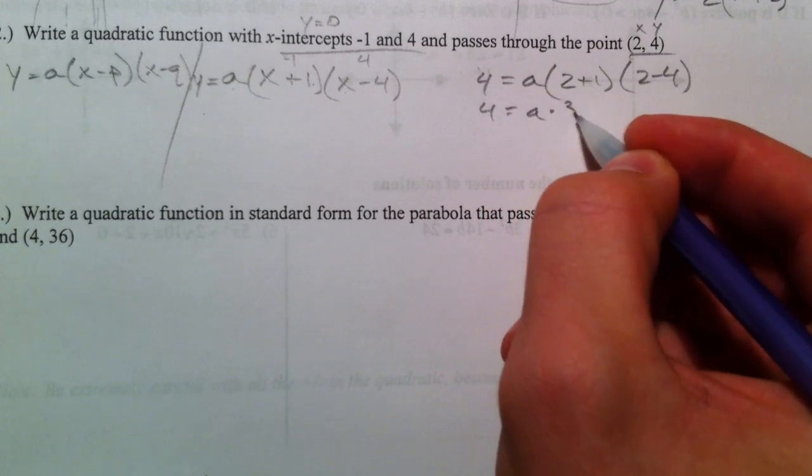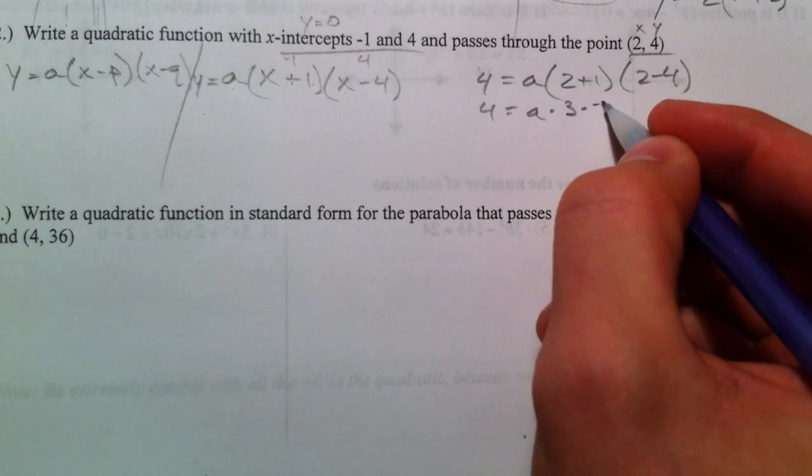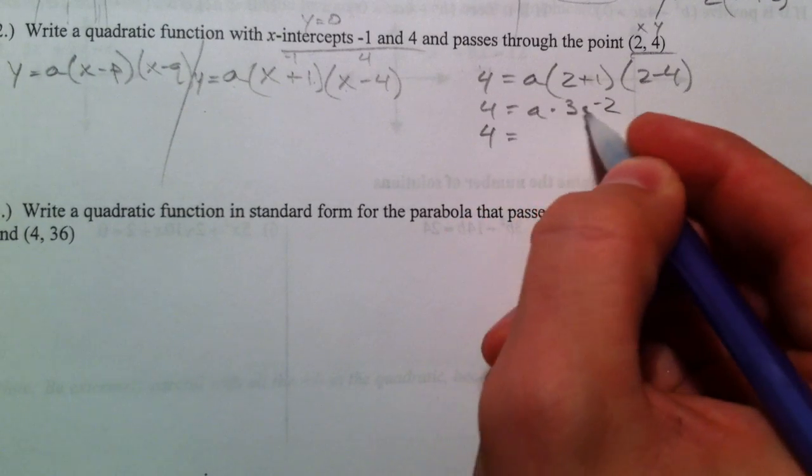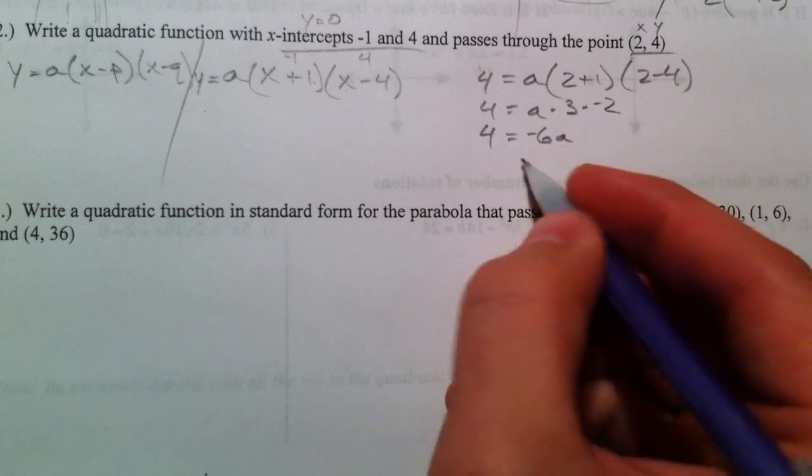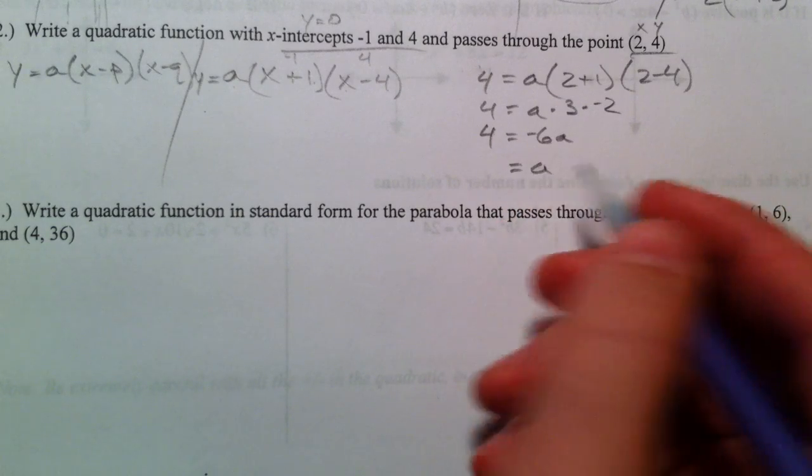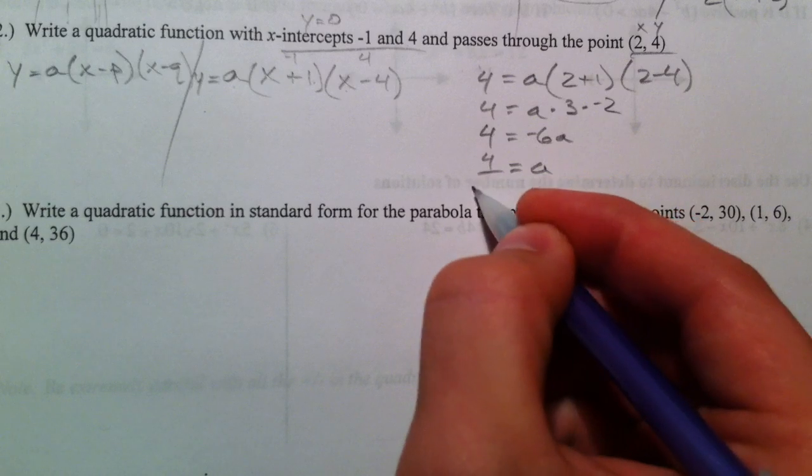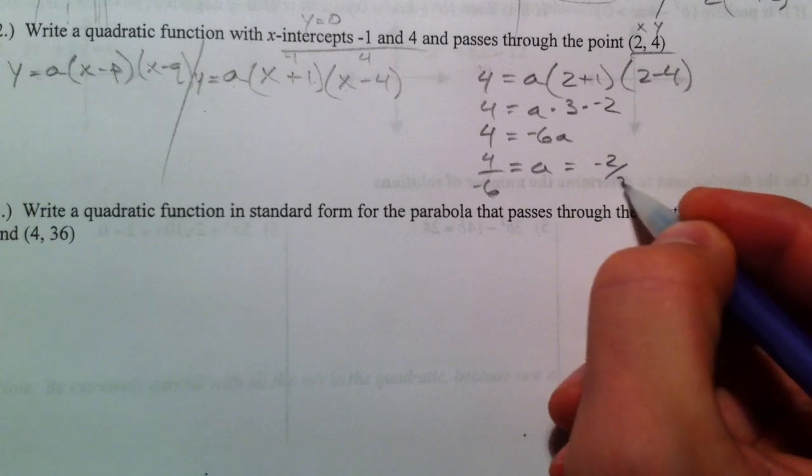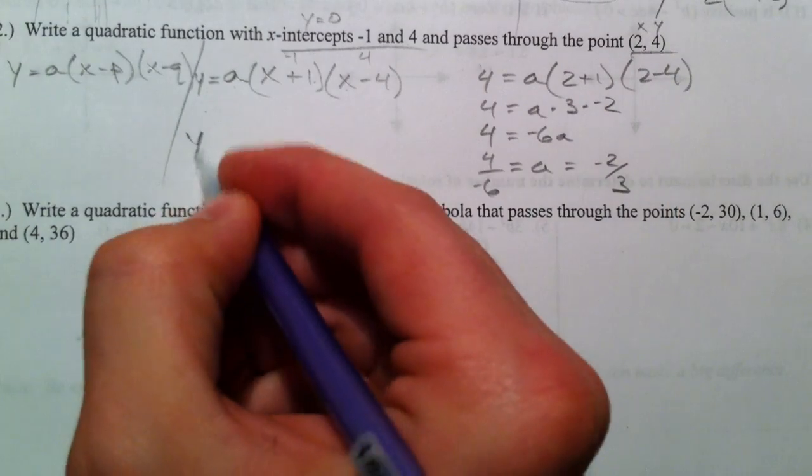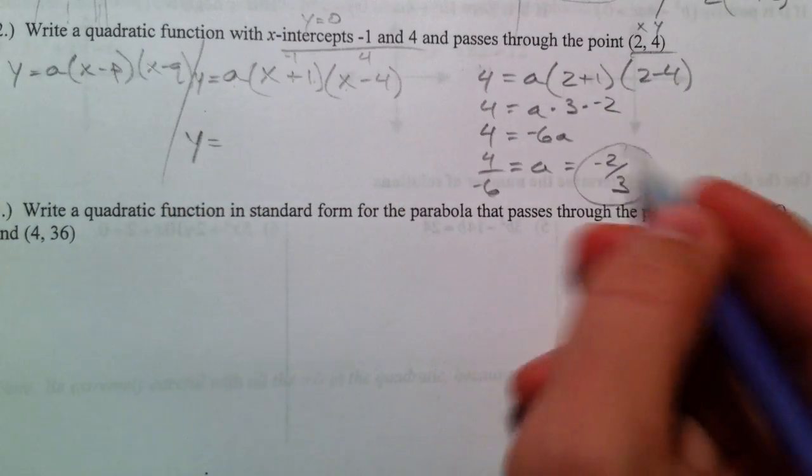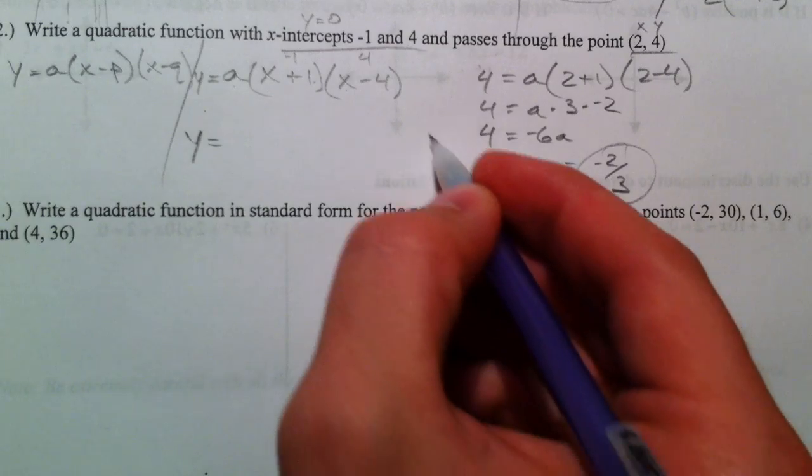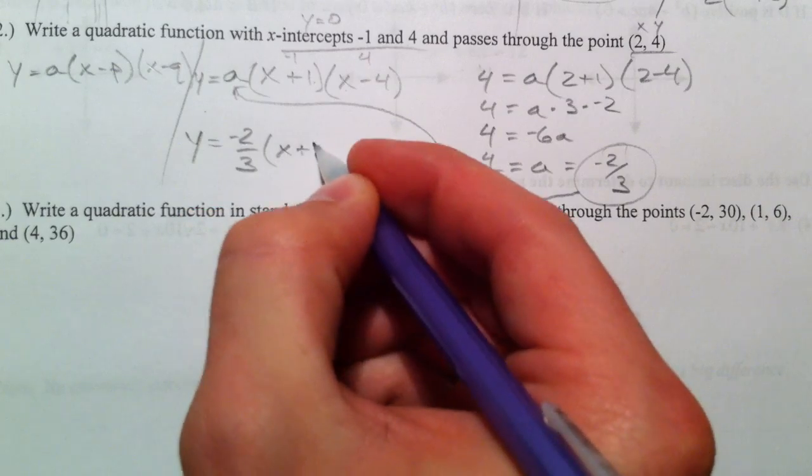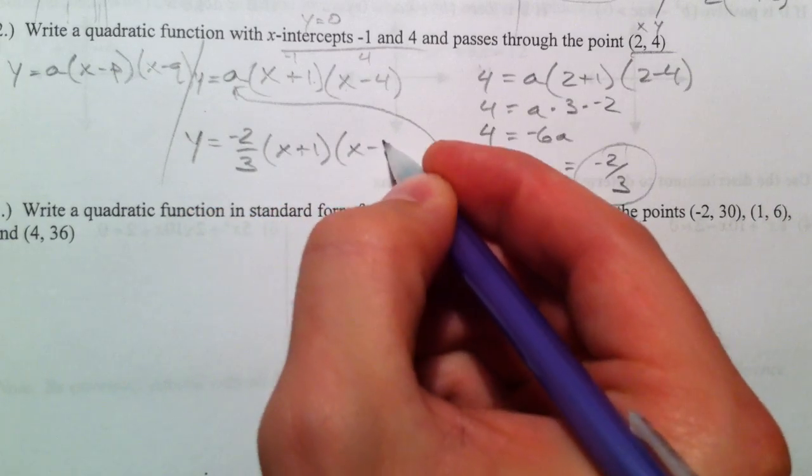A times 3 times a negative 2, and so we get 4 equals negative 6a. So divide by negative 6, and you get a has to equal negative 2 thirds. And so y equals negative 2 thirds, x plus 1, x minus 4.